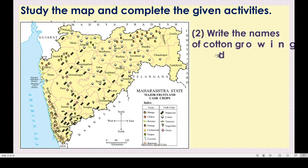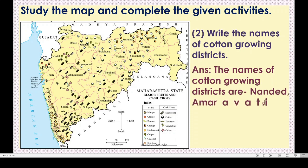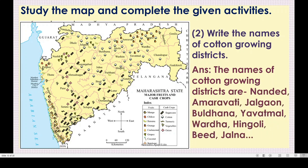Question 2: Write the names of cotton growing districts. Find the cotton symbol in the index. Many cotton symbols can be seen in: Buldana, Jalagav, Dhule, Akola, Amravati, Nagpur, Yavatmal, Hingoli, Nanded, Bid, Jalna, and Aurangabad. The names of cotton growing districts are Nanded, Amravati, Jalgav, Buldana, Yavatmal, Vardha, Hingoli, Bid, Jalna, Nandurbar, etc. All these district names we have to mention in the answer.